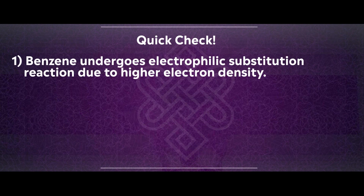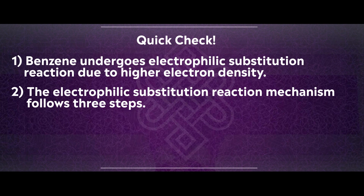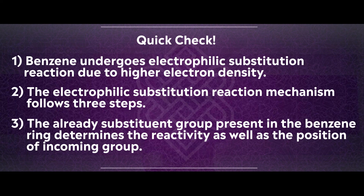Quick check for today's lesson. Number one: benzene and aromatic compounds undergo electrophilic substitution reaction due to higher electron density. Number two: the mechanism follows three steps — generation of electrophile, formation of carbocation, and extraction of a proton from the carbocation. Number three: the substituent already present on the aromatic compound determines the reactivity of the compound as well as the position of the incoming group. Thank you for attending today's lesson and I will see you in the next lesson. Kadinchela.